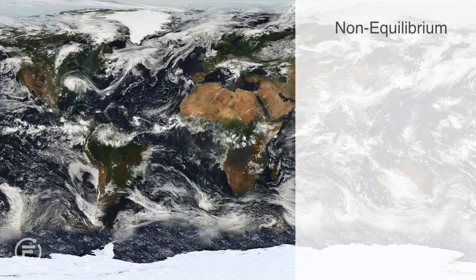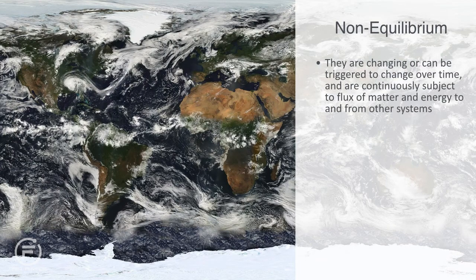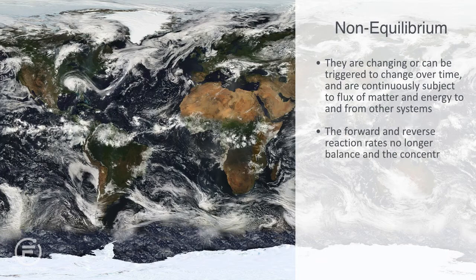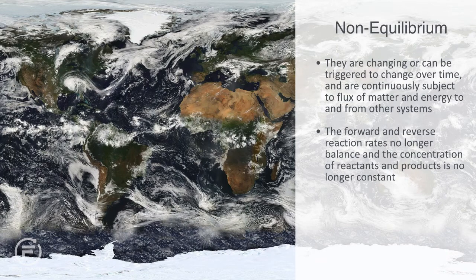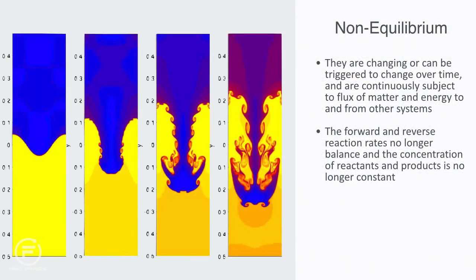Most systems found in nature or considered in engineering are not in thermodynamic equilibrium. They are changing or can be triggered to change over time, and are continuously subject to flux of matter and energy to and from other systems. Equilibrium thermodynamics restricts its considerations to processes that have initial and final states of thermodynamic equilibrium, and the time course of processes is deliberately ignored. But with far-from-equilibrium systems, the forward and reverse reaction rates no longer balance, and the concentration of reactants and products is no longer constant. Damping of acoustic perturbations or shock waves are non-stationary, non-equilibrium processes. Driven complex fluids, turbulent systems, and glasses are other examples of non-equilibrium systems within physics.